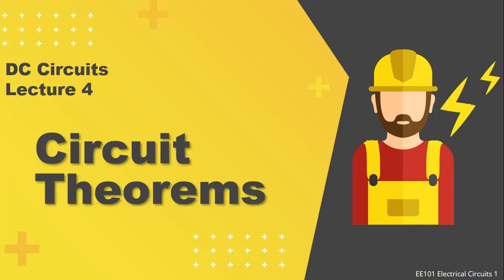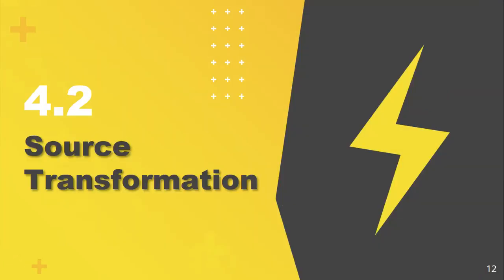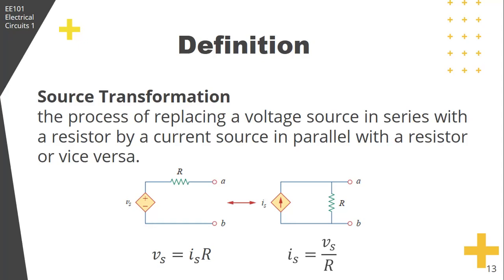Hello class, still on circuit theorems. We will now proceed to source transformation. Source transformation is the process of replacing a voltage source in series with a resistor by a current source in parallel with a resistor or vice versa.